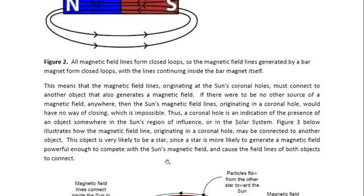Now, this means that the magnetic field lines which originate at the Sun's coronal holes must connect to another object that also generates a magnetic field. If there were to be no other sources of magnetic field anywhere near the Sun's magnetic field lines, then the Sun's magnetic field lines would just be open, which is impossible. So, a coronal hole is actually an indication of the presence of an object somewhere in the Sun's region of influence or in the solar system.